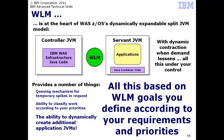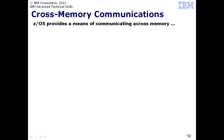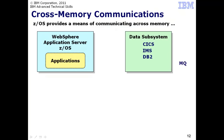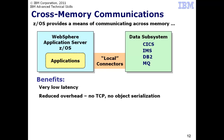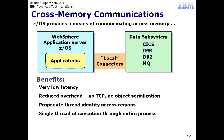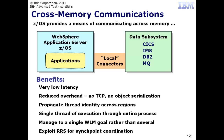The essential benefit is management of application server JVM resources to WLM-defined goals. The final point of exploitation we'll cover is cross-memory communications. Imagine a WAS-ZOS application server and a key data subsystem co-located on the same ZOS logical partition. Local connectors provide a way of communicating between WAS and the data subsystems using ZOS cross-memory facilities. The benefits include very low latency and reduced processing overhead, as there's no TCP stack involved and no need to serialize objects being passed.